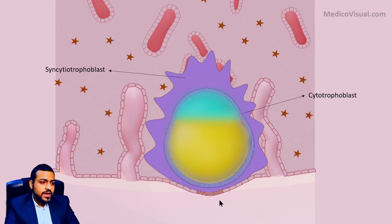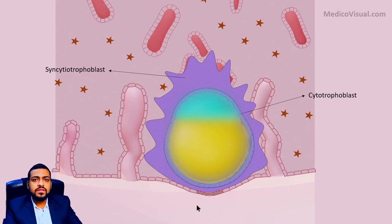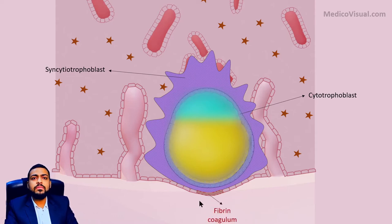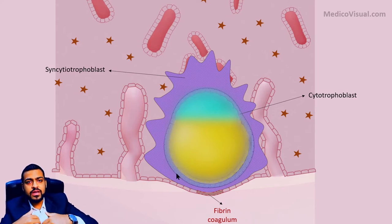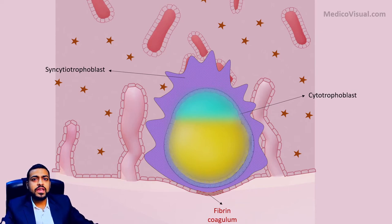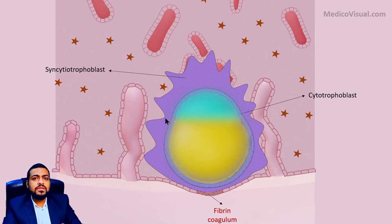From the point where the embryo entered into the endometrium, there was a surface defect which is now filled by deposition of a fibrin network, called the fibrin coagulum. Because of the presence of the embryo inside the endometrium, there will be a slight bulge of endometrium into the uterine cavity, and as it grows bigger, the bulge will become more prominent.